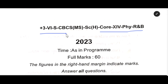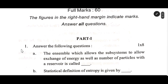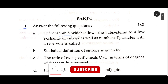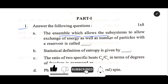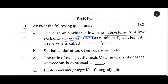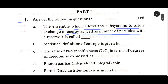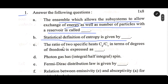Core Protein Physics Honours, Semester — Number One (Fill in the Blanks): The ensemble which allows its subsystems to exchange both energy as well as number of particles with a reservoir is called ___. The statistical definition of entropy is given by ___. The ratio of two specific heats Cp/Cv in terms of degrees of freedom is expressed as ___.